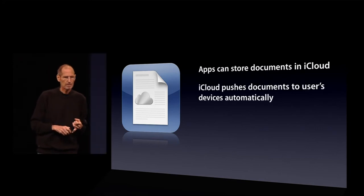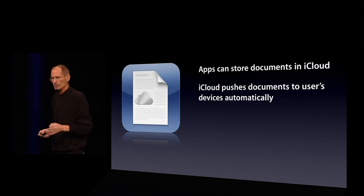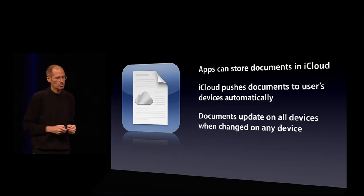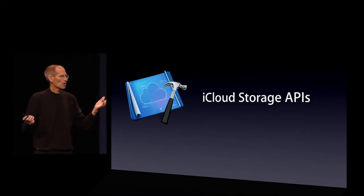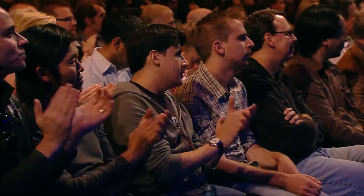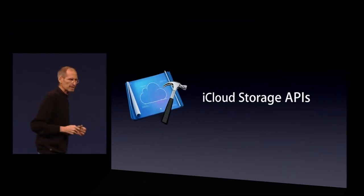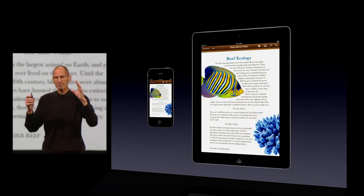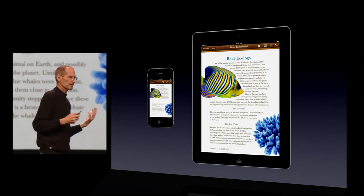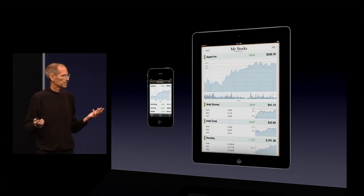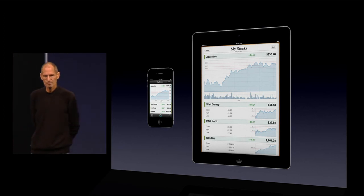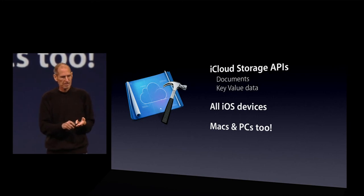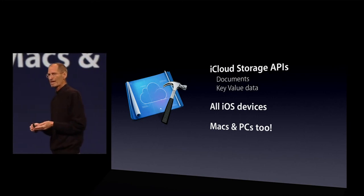Apps can store documents in iCloud. iCloud pushes those documents to a user's devices automatically. The documents update on all devices when changed on any device. And we are releasing APIs to all of you, so it's really easy to tie your apps into iCloud's storage system. You can have complex documents like Pages, or we've got another storage facility for key value data. So as an example, if you've got an app that just tracks stocks, you can just update the key value pairs and we'll store that in the cloud as well. Documents and key value data works across all iOS devices and Macs and PCs too.